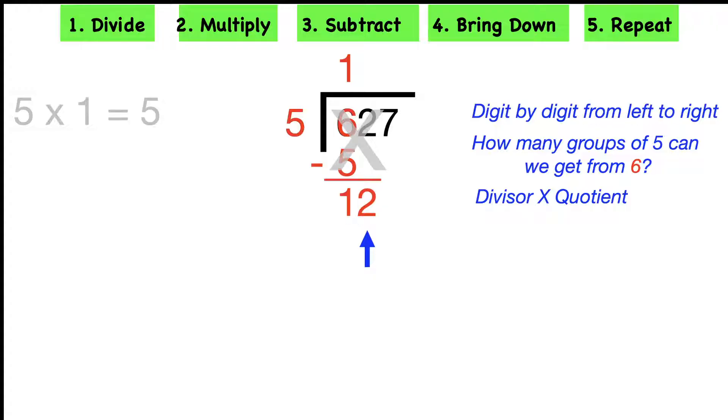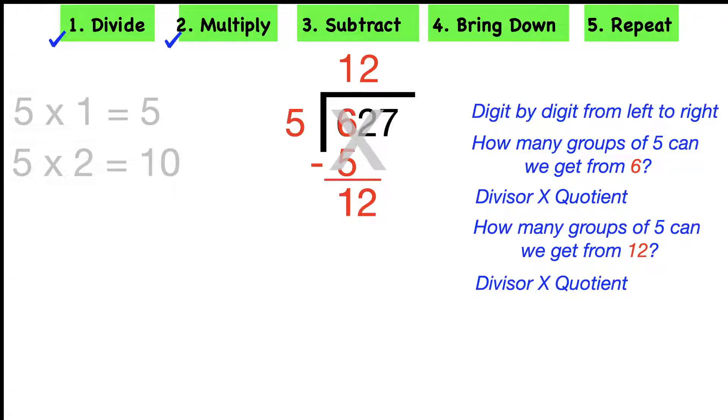In other words, we're going to start with the divide. How many groups of five can we get from 12? The answer to that is two. Now we multiply. We're going to multiply our divisor times the quotient. In other words, five times two is ten. That ten goes underneath the twelve. And now we're ready to subtract. Twelve minus ten is two.